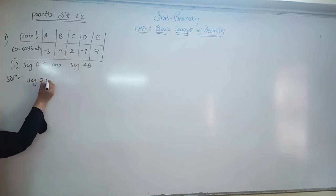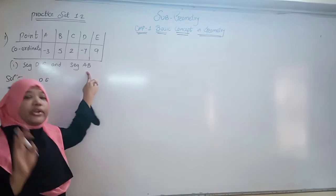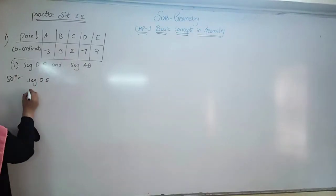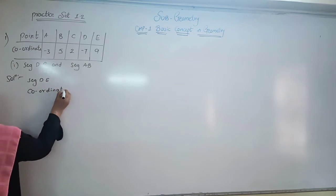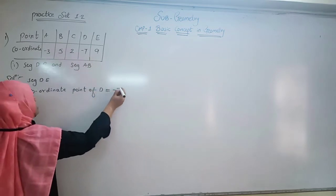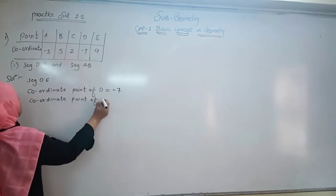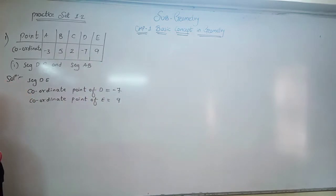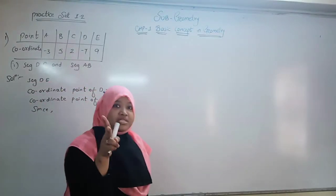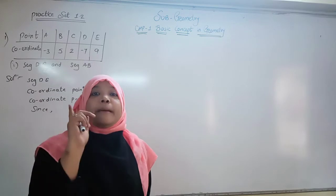First question: we have Segment DE and Segment AB, and we have to decide whether they are congruent or not. First we solve Segment DE. The coordinate point of D is minus 7, and the coordinate point of E is 9. Now, which number is bigger? We have one negative and one positive number. Positive number is bigger, so 9 is bigger than minus 7.